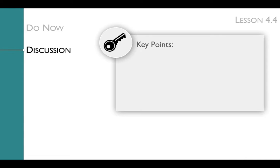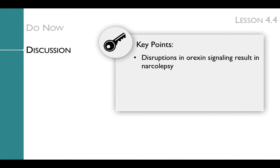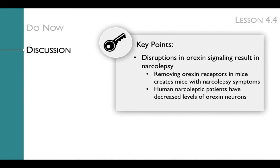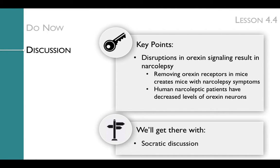The key points of the lesson discussion are that disruptions in orexin signaling result in narcolepsy, specifically that removing orexin receptors in mice creates mice with narcolepsy symptoms, and that human narcoleptic patients have decreased levels of orexin neurons. We'll get to these key points with a Socratic discussion.